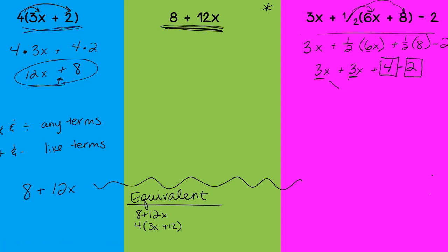I can combine 3x and 3x, and I can combine 4 and 2. I'm combining the x's using addition, so this would be 6x plus, this would be combined using subtraction. 4 minus 2 is 2. So here I cannot go any further, and I notice that this is nowhere near what I have up here. So since this expression is not equivalent to 8 plus 12x, then it also cannot be equivalent to 4 times 3x plus 2.